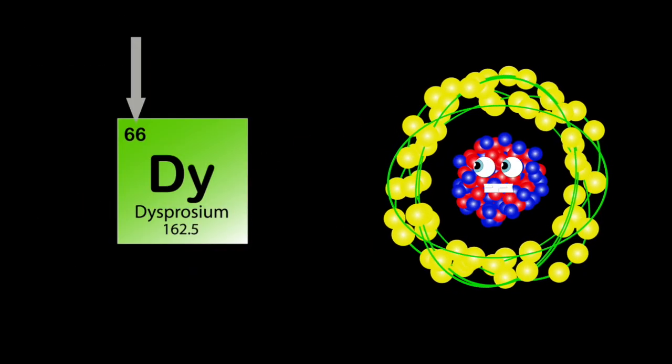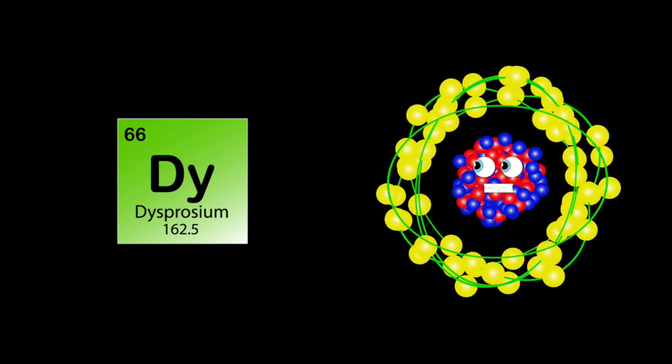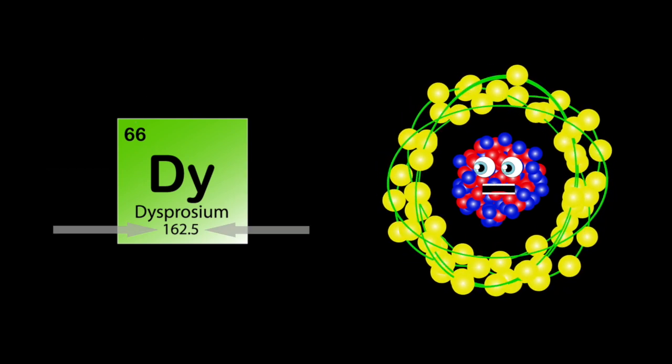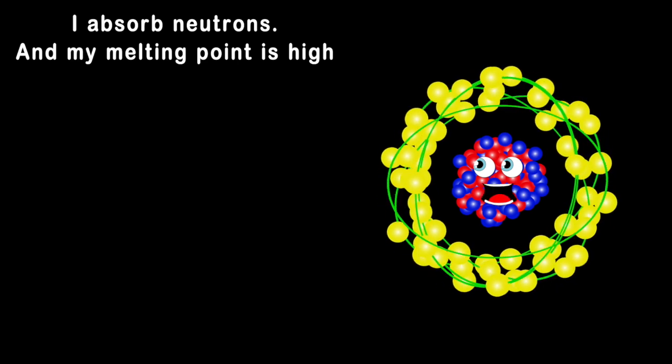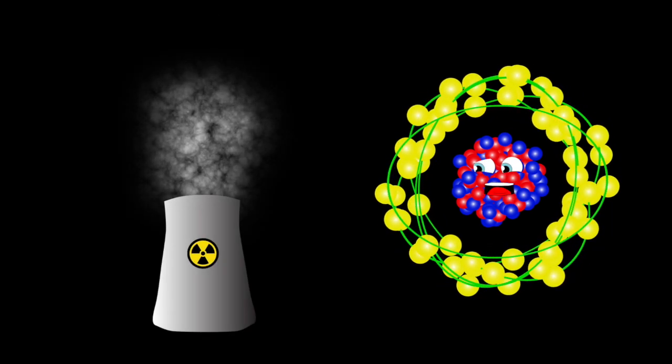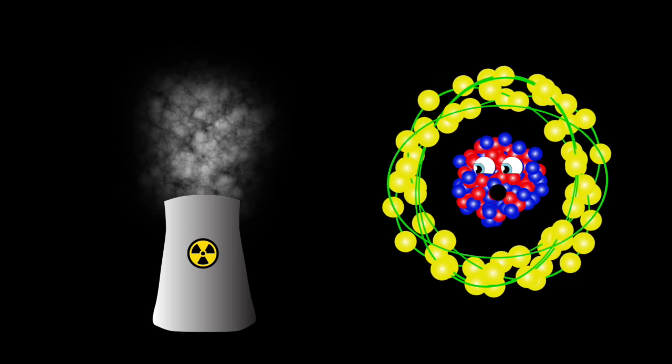Dysprosium's my name, my atomic number's 66, my symbol's DY 162, my atomic mass mix. I absorb neutrons, and my melting point is high, I'm used in nuclear reactors, control rods so they don't fry.